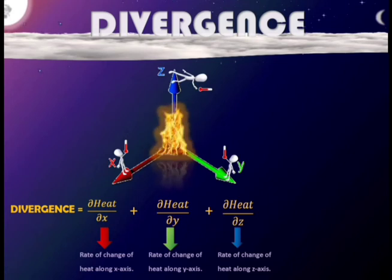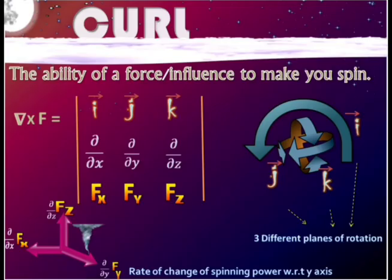Divergence can be visualized as the rate of change of the field as you move away from the source of the field in a three dimensional setup. Curl on the other hand can be seen as the ability of a field to try to rotate you or spin you in a certain direction. i, j, and k being the three different planes of rotation, three different dimensions in which rotation can take place.